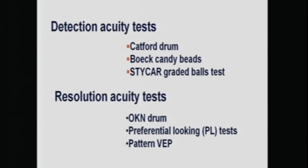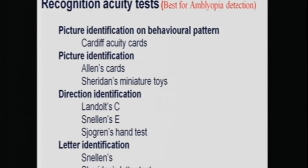You can have different methods of measuring visual acuity. Distant detection acuity tests involve just detecting any object like candy beads or graded balls. Resolution acuity tests assess whether the child resolves objects into components, using an OKN drum, preferential looking tests, or pattern VEP. The most helpful for testing for amblyopia are recognition acuity tests, where a child actually recognizes an object — like Cardiff acuity cards, Allen cards, toys, LANC, and finally ETDRs or Snellens.